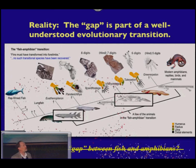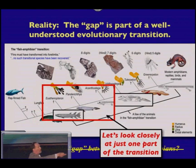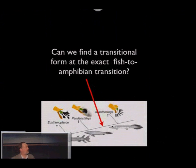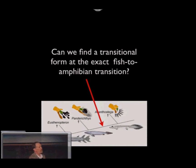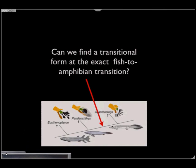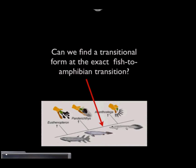Let's look very closely at just one part of this transition — the part that starts with Eusthenopteron, then goes to Panderichthys and Acanthostega. These animals are fish that are very amphibian-like, but still fish. Ichthyostega is an amphibian that is very fish-like, but still an amphibian. Can we find a transitional form at the exact fish-to-amphibian transition that has all the transitional characters we would expect? I want to show you the story of one of the scientists who sought and found this transitional form.